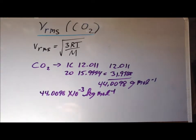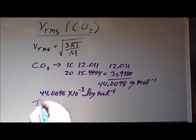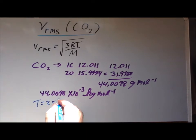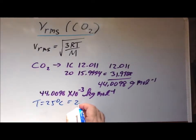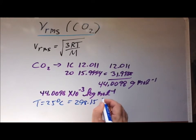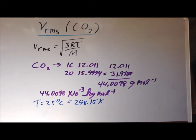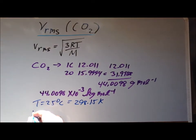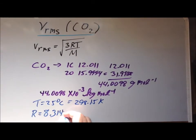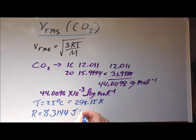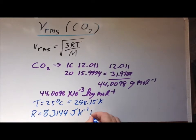We choose a temperature of 25 degrees centigrade, which is equal to 298.15 Kelvin. And last but not least, we are going to need the gas constant R, and the form of the constant that we need is 8.3144 joules per Kelvin per mole.